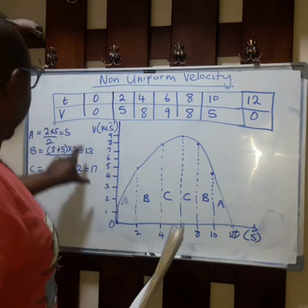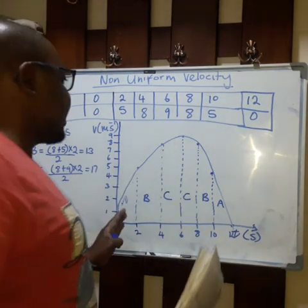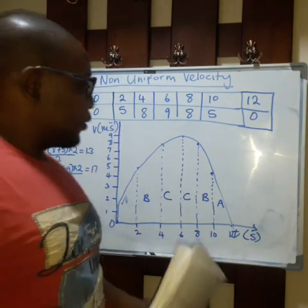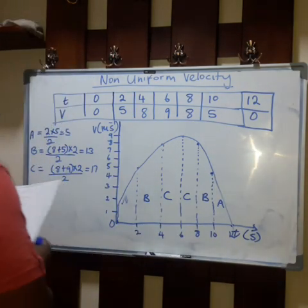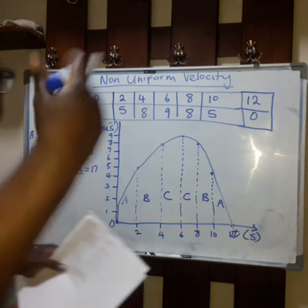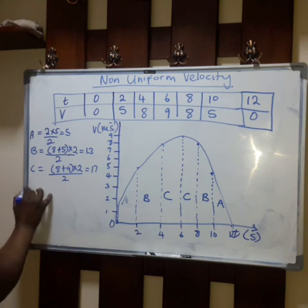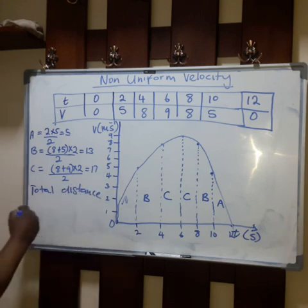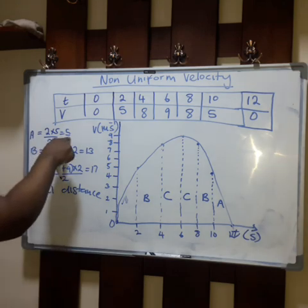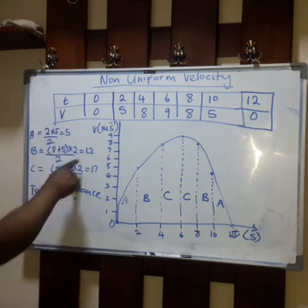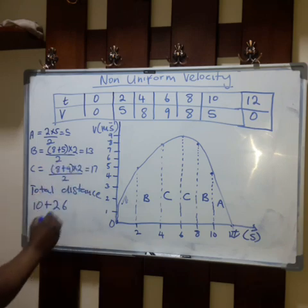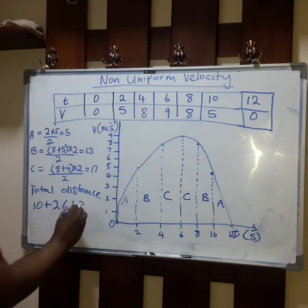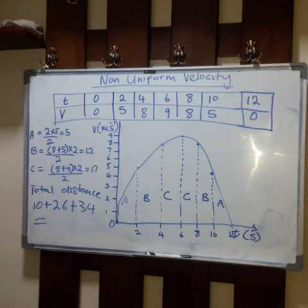These values — 5, 13, and 17 — are only for one side of the curve. Remember, it is symmetrical, so we multiply by 2. The total distance is (5 × 2) + (13 × 2) + (17 × 2) = 10 + 26 + 34. Therefore, the total distance covered is 70 meters.